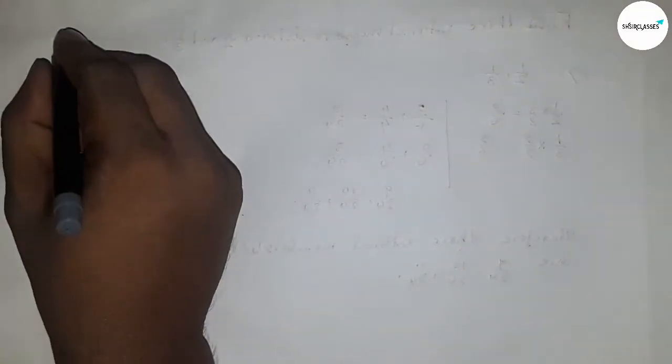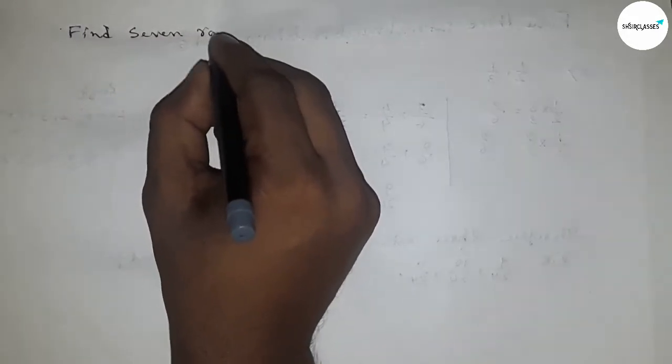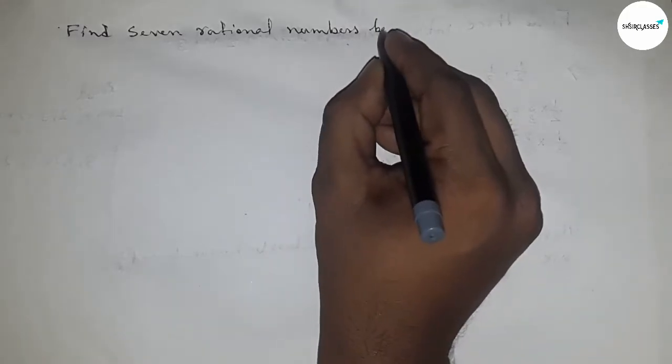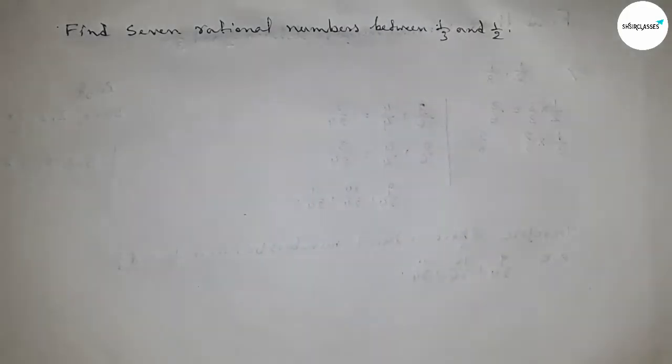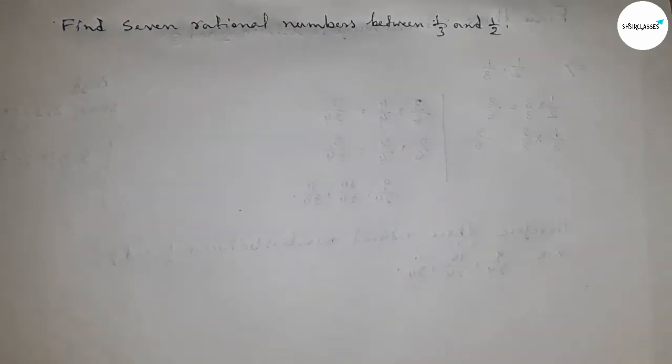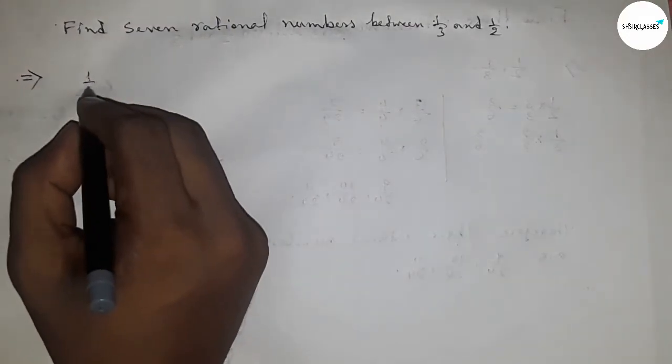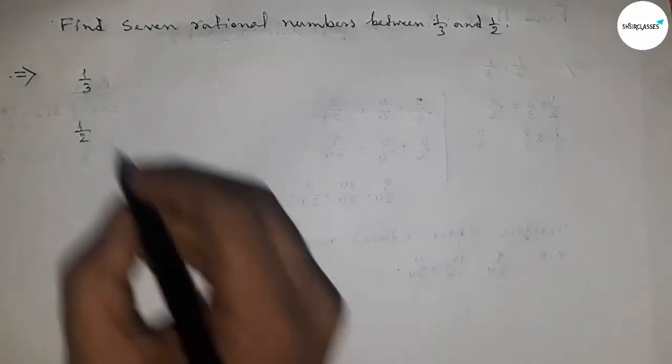Hi everyone, welcome to accessory classes. Today we have to find seven rational numbers between 1 upon 3 and 1 upon 2. So let's start. First of all, write down here the given rational numbers: 1 upon 3 and 1 upon 2.